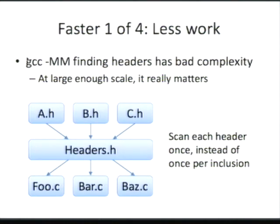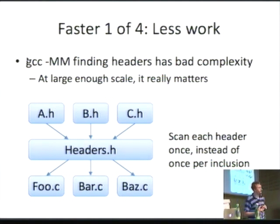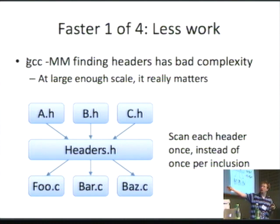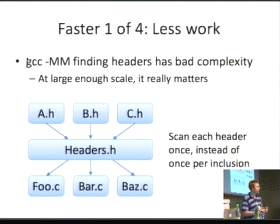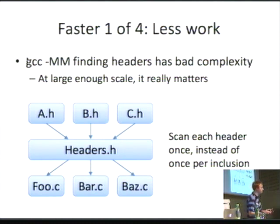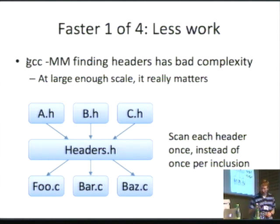The first way we were able to make things faster was by doing less work. GCC-MM, if you have several C files all including one common header, will end up scanning the contents of headers many times. At large scales, this can start to matter. You could imagine making these changes in a Make-based system, but it's a lot harder to do — that was one nice improvement.